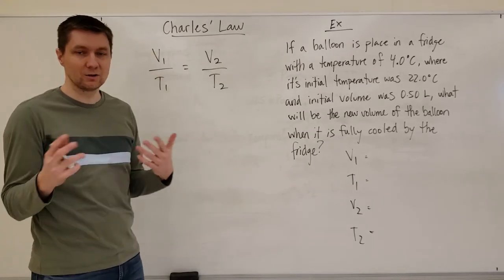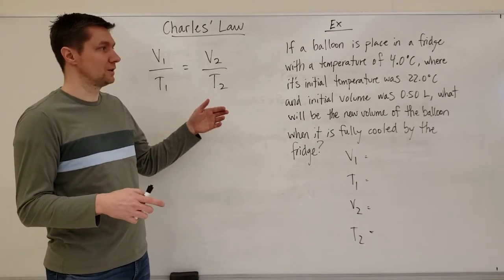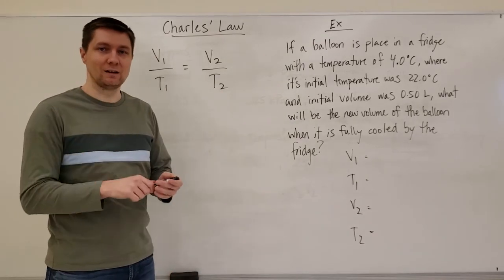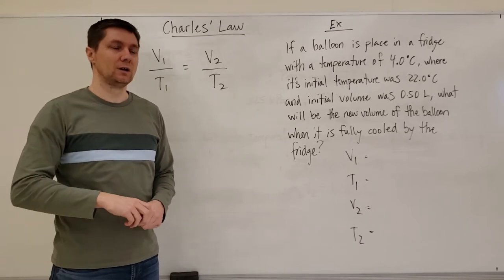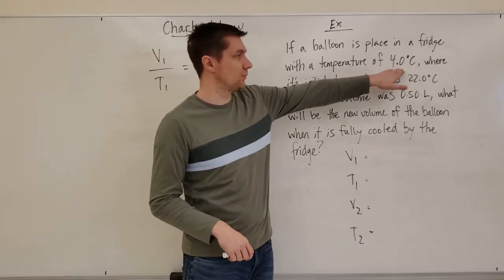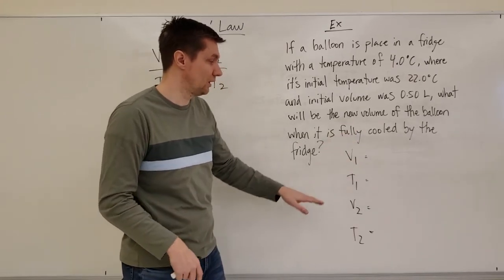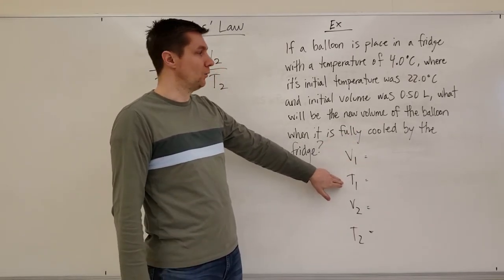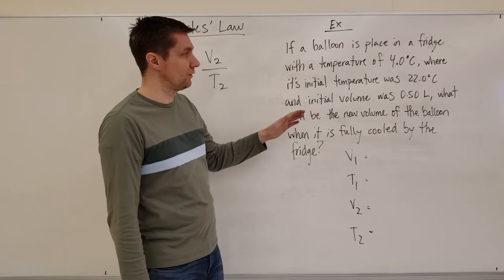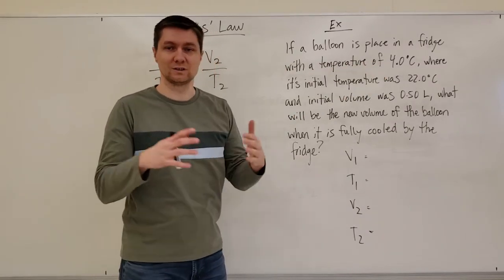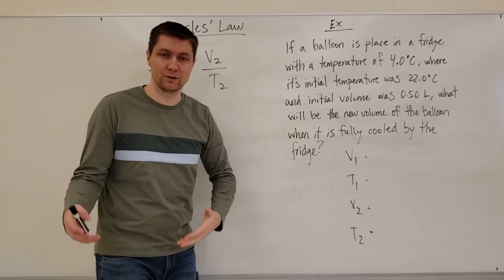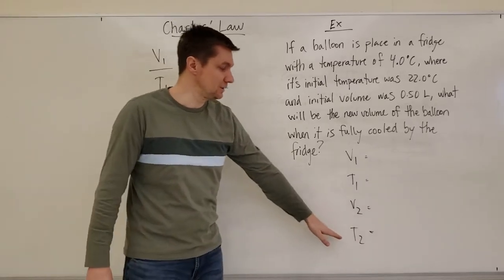Something that I notice that kids do a lot with problems like this is they like to skip the words and just pick out all the numbers. They'll say okay here's my first number, it's a temperature, Mr. Orr says it's got to be in Kelvin so let's put it into Kelvin and that's T1. Well if you read the question carefully you'll notice that this is the temperature of the balloon once it's fully cooled by 4 degrees Celsius. So that's actually T2.